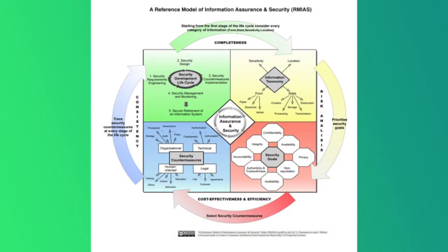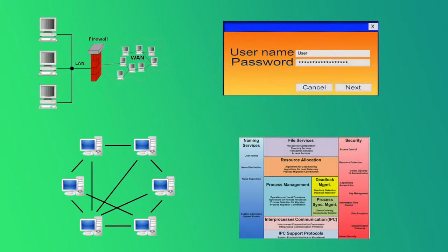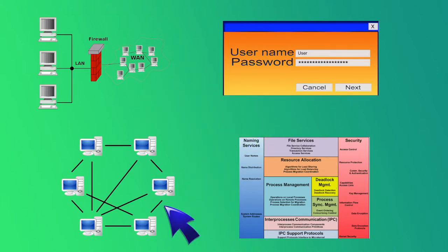To respond to these threats, organizations implement information security plans to establish control of information assets. Information security plans specify protection mechanisms for organizational information. There is usually a heavy reliance upon technical security mechanisms such as firewalls, user passwords, closed networks, and operating system protection mechanisms.